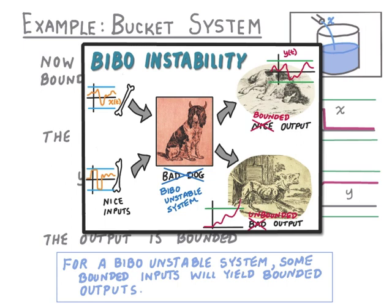I hope this analogy now makes it clear why we look at bounded inputs when we're trying to test for stability of systems. Obviously we can't test a system by trying every single bounded input — there are an infinite number of bounded inputs. We need another, more mathematical way of determining system stability or instability.